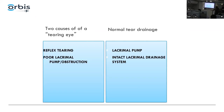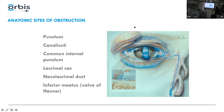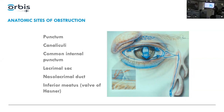Two causes of a tearing eye are reflex tearing and poor lacrimal pump function. Regarding anatomy: the punctum leads to the common internal punctum, lacrimal sac, nasal lacrimal duct, inferior meatus, and the valve of Hasner right at the inferior turbinate. Usually when we're born the valve is closed; as we grow it opens. Sometimes in children that valve does not open, causing congenital tearing. Knowing all these parts helps you figure out where the blockage is.